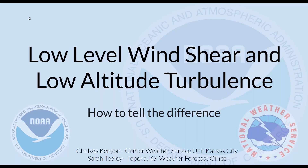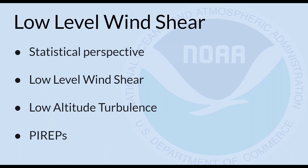Good morning. My name is Chelsea Kenyon from the Kansas City Center Weather Service Unit here at Beard College Center in Alaska. With me is Sarah T.B. from the forecast office in Topeka. We've been working on low-level wind shear for quite a while, and we wanted to talk about the differences between low-level wind shear and low-altitude turbulence. There's a lot of confusion about these two things, both on the pilot side and on the forecaster side.